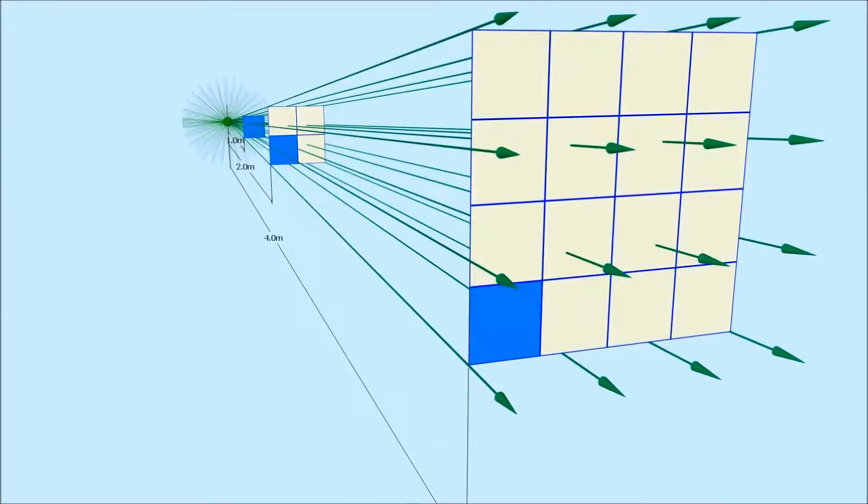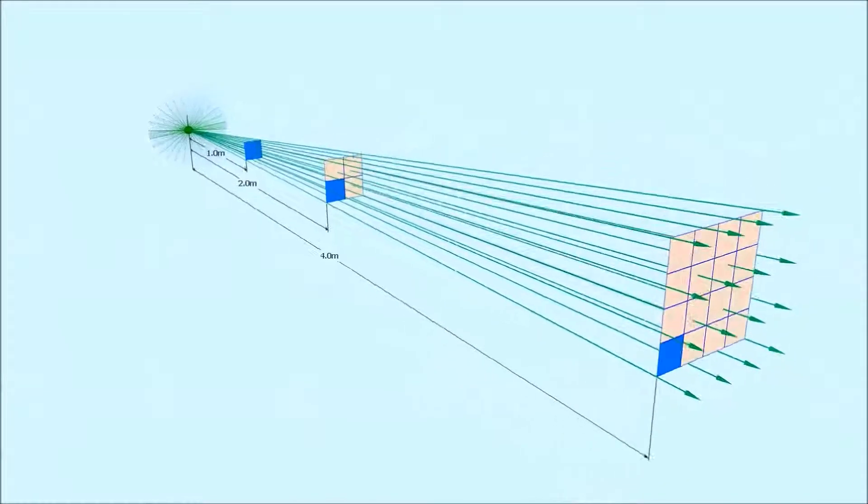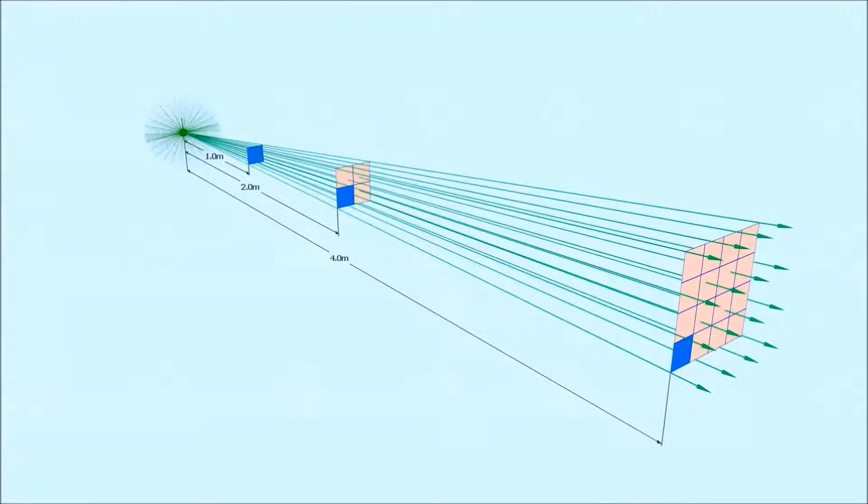So again, the inverse square law tells us that at 1 metre we have an intensity of 16 rays. At 2 metres, twice as far away, we have 1 quarter the intensity, or 4 rays.